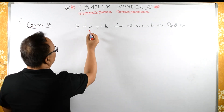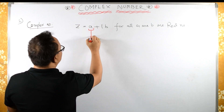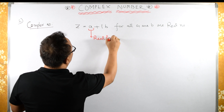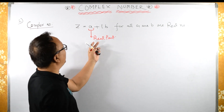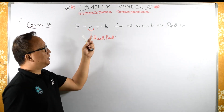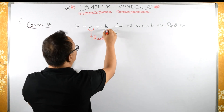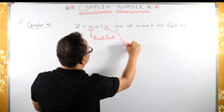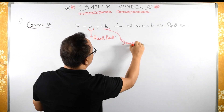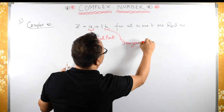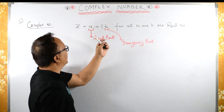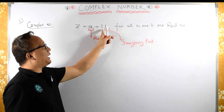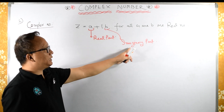This part is called the real part. What is the real part? The real part means it is free from i. And this part is called the imaginary part — those real numbers which are associated with i are called the imaginary part.